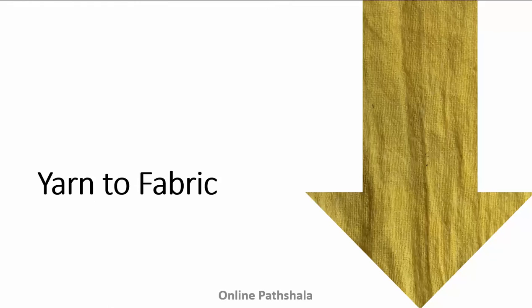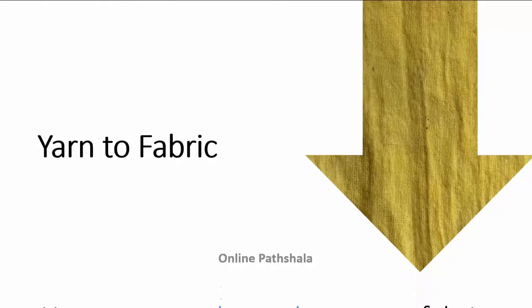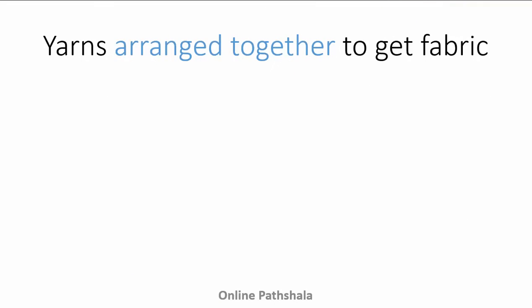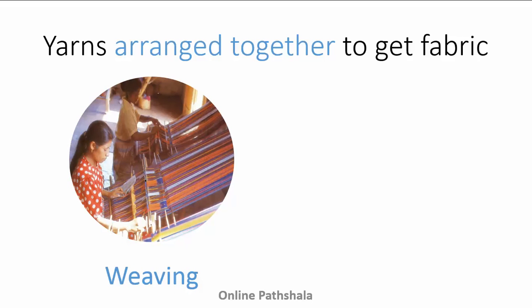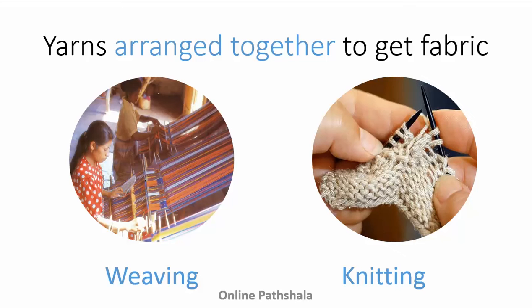And how about yarn to fabric? There are several ways by which fabrics are made from yarn. Two main processes are weaving and knitting. The process of arranging two sets of yarn together to make a fabric is called weaving. Weaving of fabric is done on looms, which are either hand operated or power operated. A good example of weaving is the weaving of a saree. In knitting, a single yarn is used to make a piece of fabric — for example, scarves, sweaters or socks. Like weaving, knitting can also be done manually or by machine.